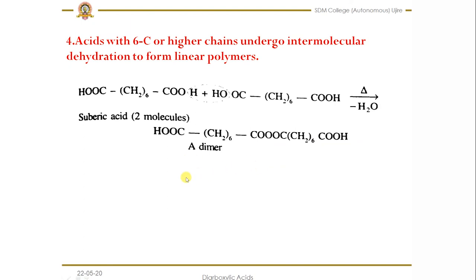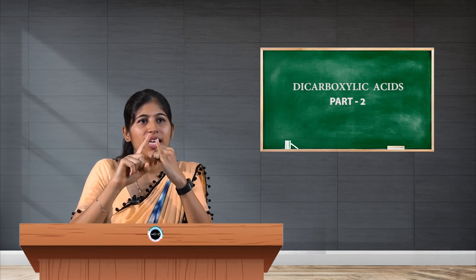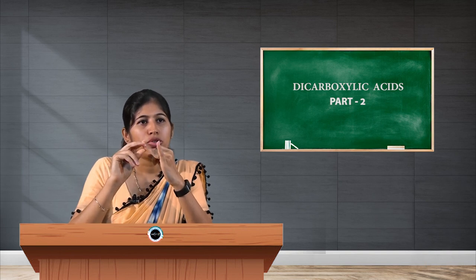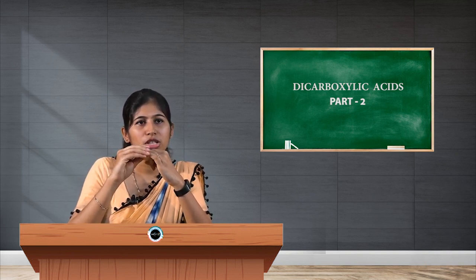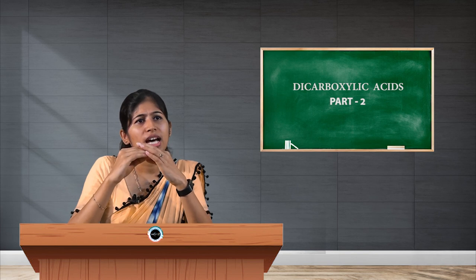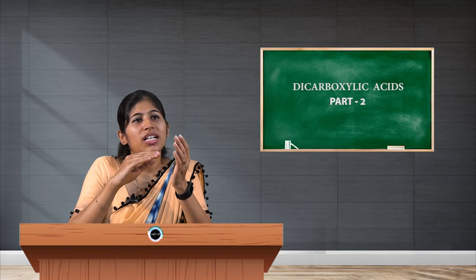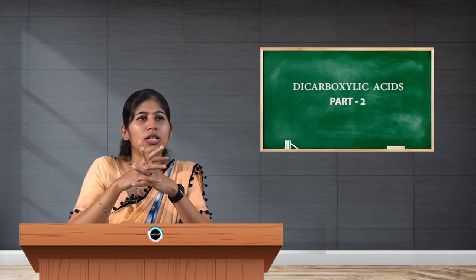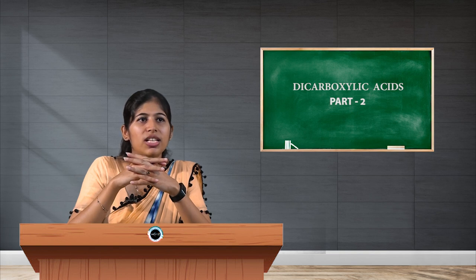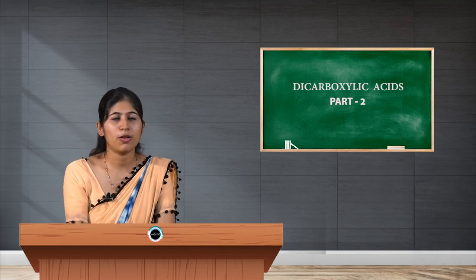To summarize the action of heat of dicarboxylic acids: if they have no carbon or one carbon between the two carboxylic groups, they undergo decarboxylation. If they have two or three carbons, they give the corresponding anhydrides. If they have four or five carbons between the two carboxylic groups, they give the corresponding ketone by cyclization. If they have six or higher carbons, they undergo polymerization, that is intermolecular dehydration, to give polymers.